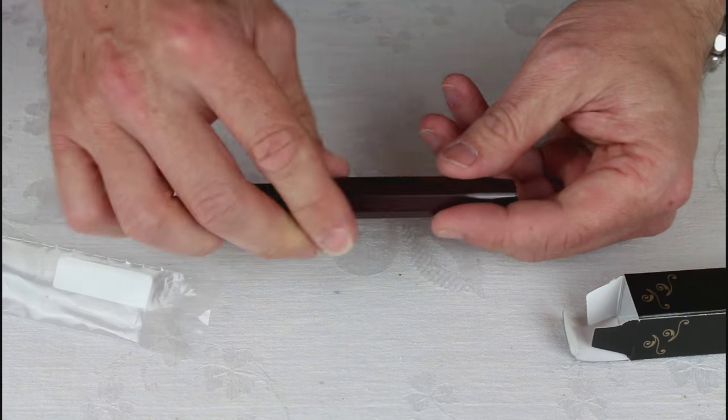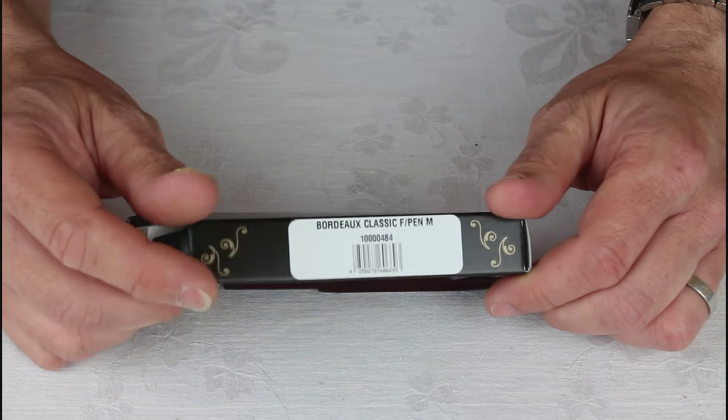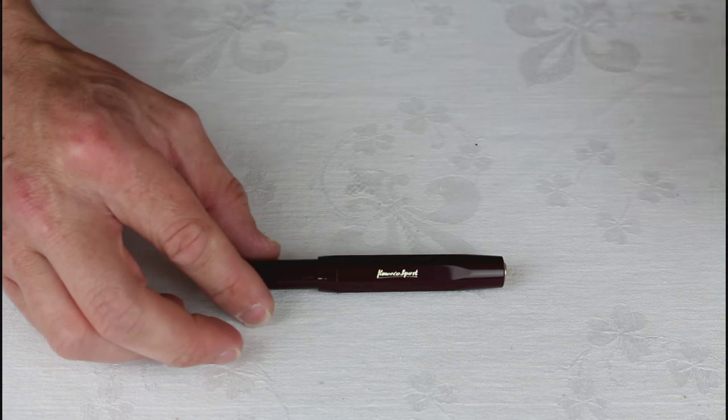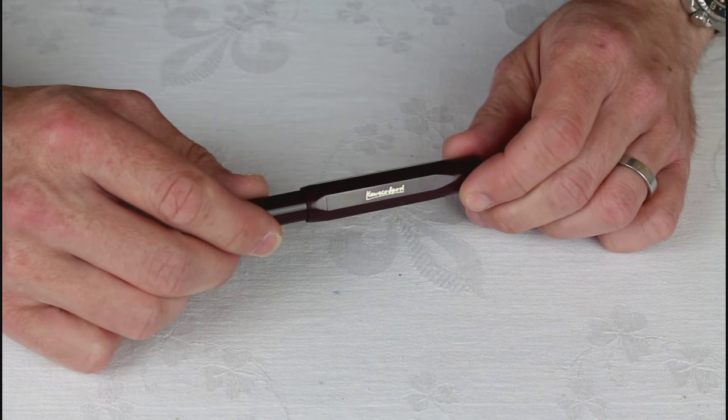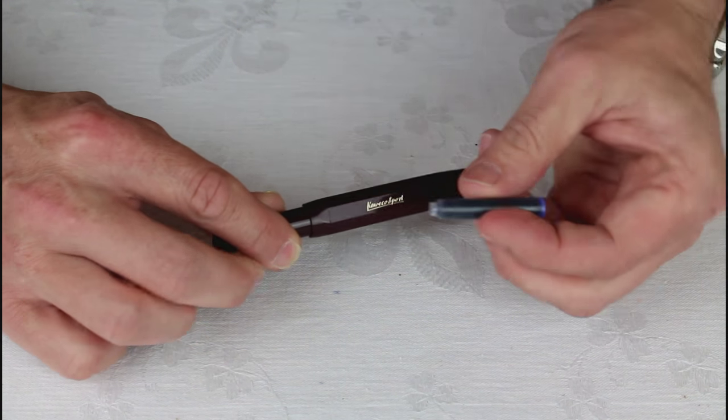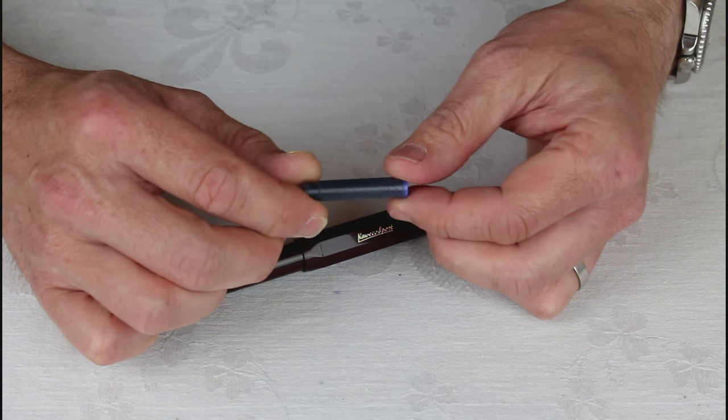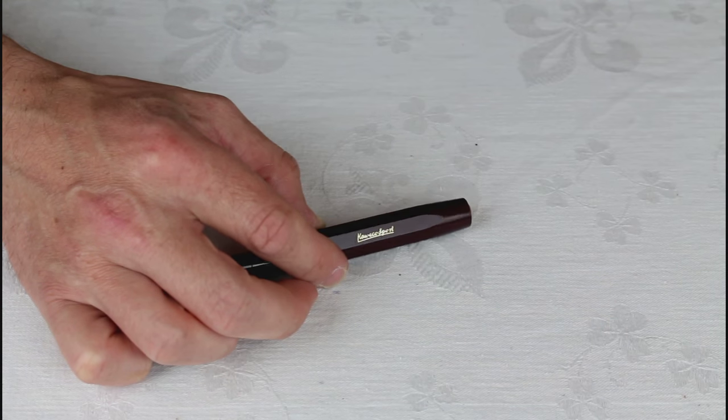Comes in simple cardboard and plastic wrapping there, not much to read on the box. You can see this one is the Bordeaux, a nice deep burgundy red. Comes with a little international size branded ink cartridge there. I don't use those but it's nice to have in there.